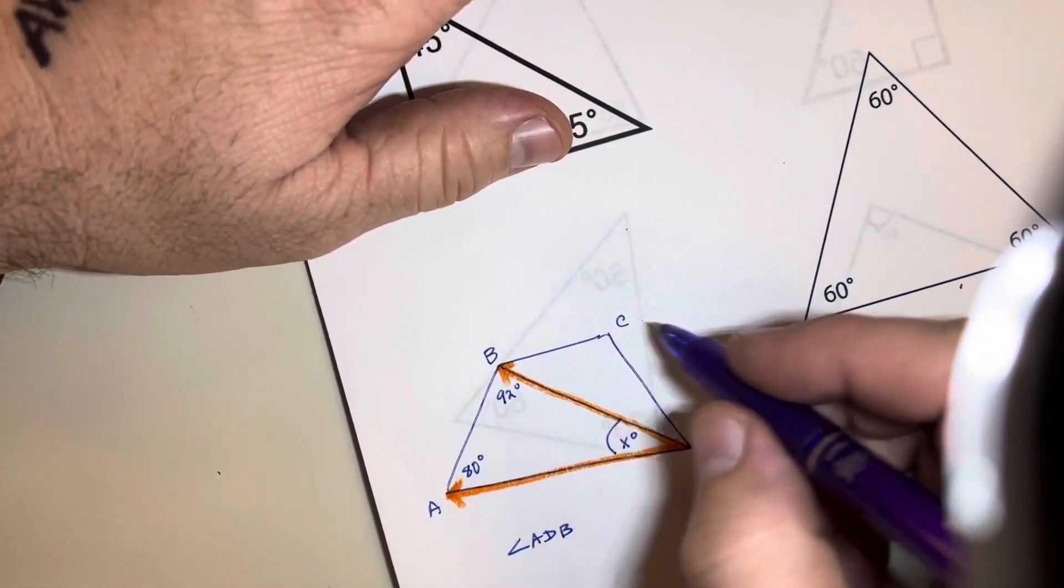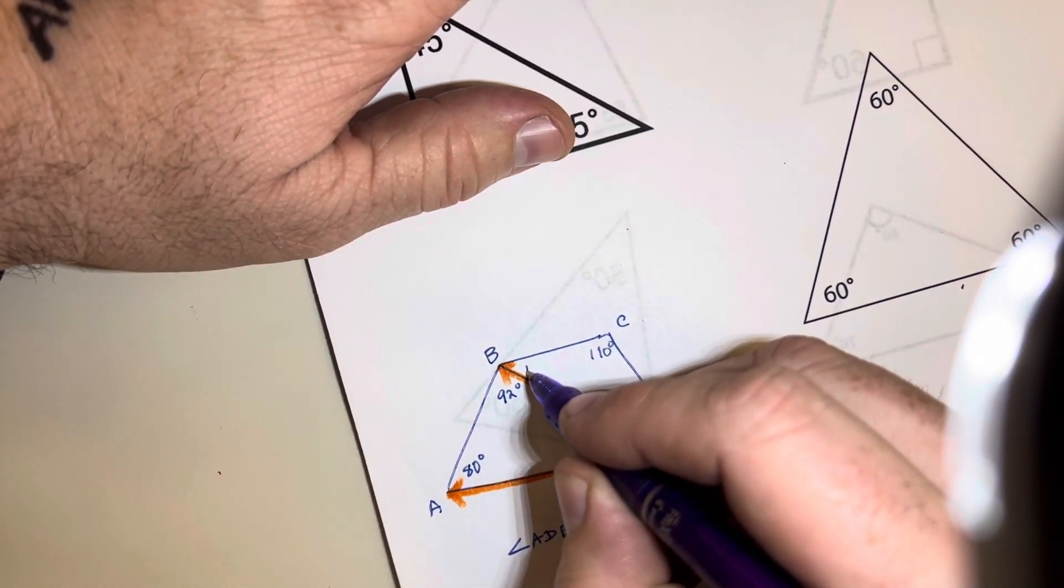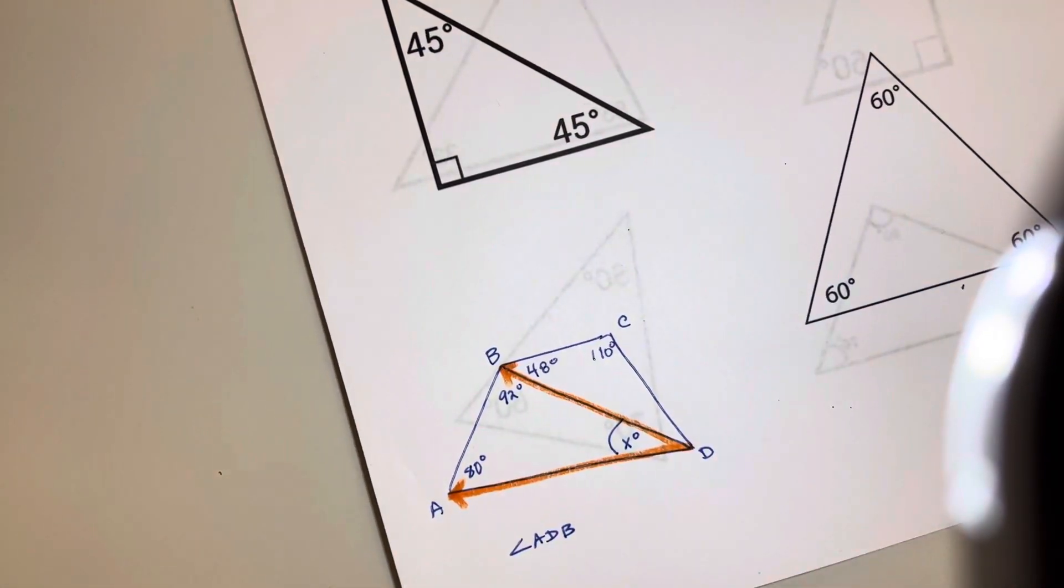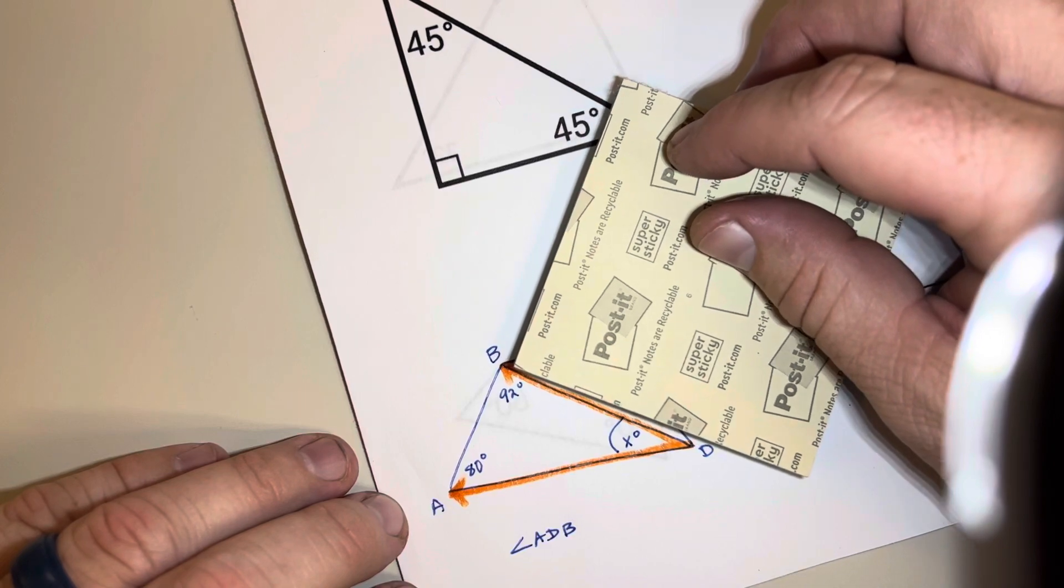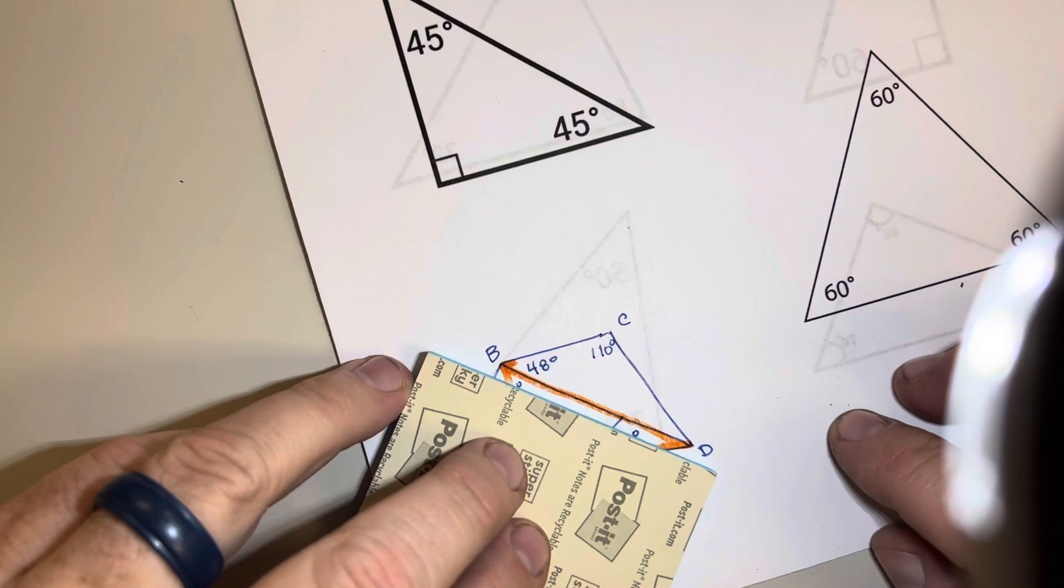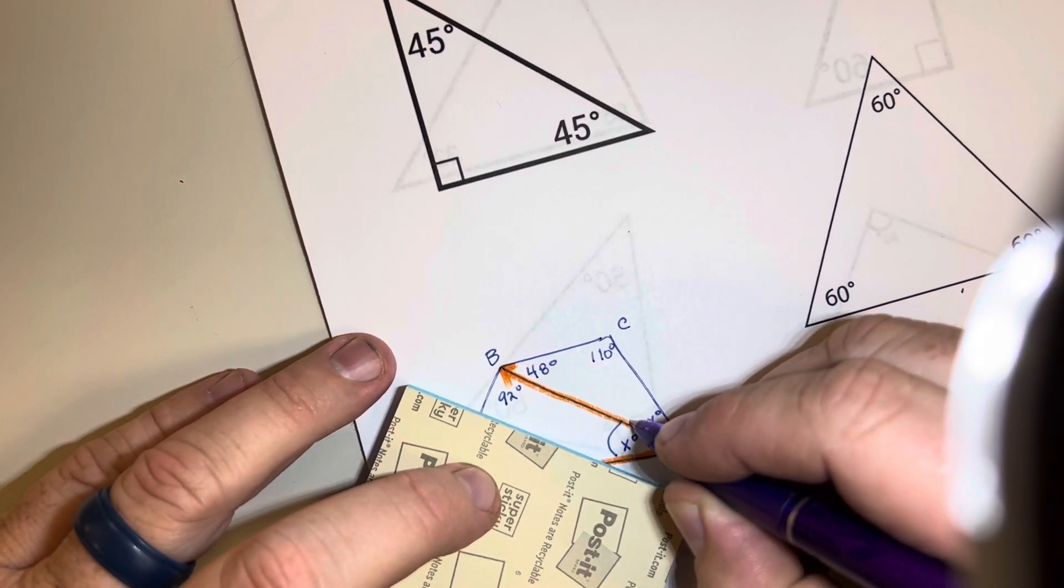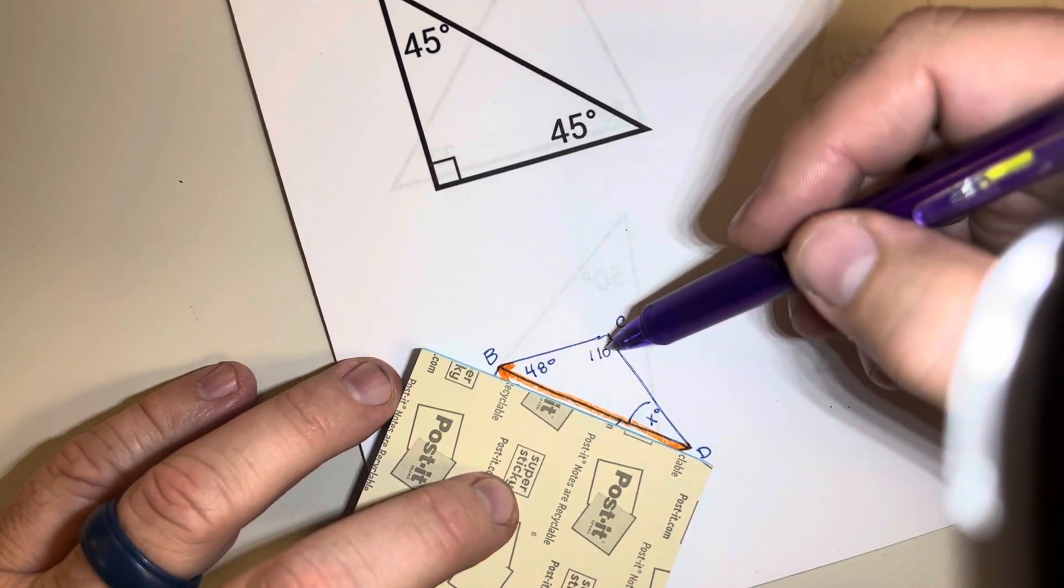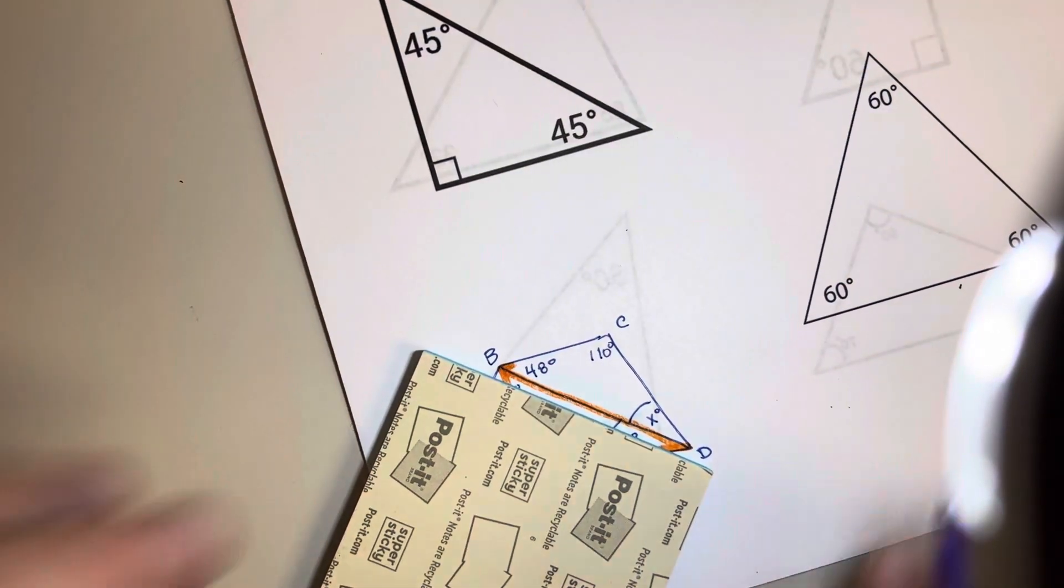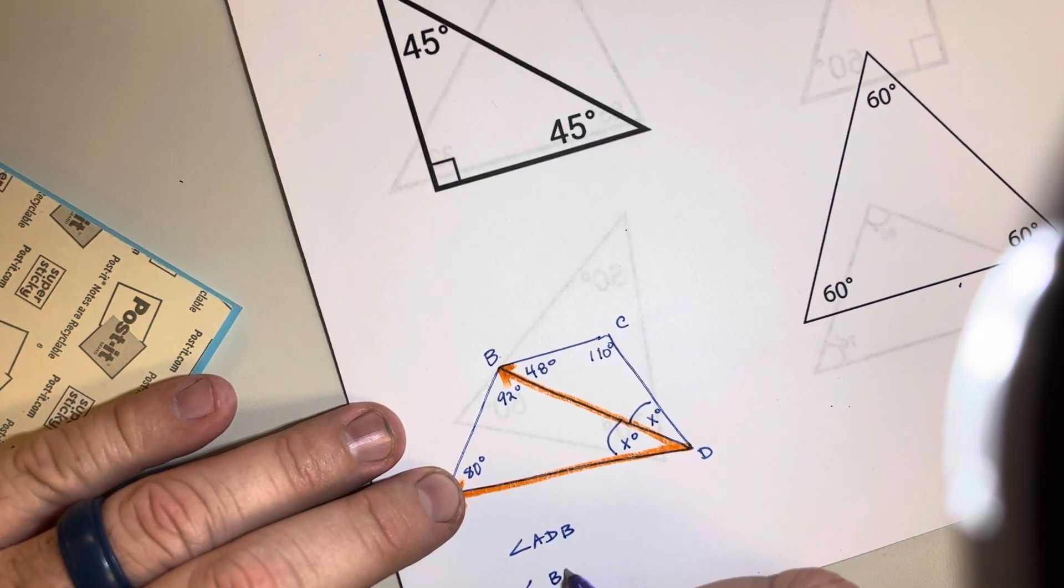Because we're just ignoring, no matter what it says over here, like for example, if this was 110 degrees, and this one over here was 48 degrees, we're just ignoring all of that. Like, I don't need that triangle over there to help me find this missing angle. And it's the same way here, I don't need this triangle over here to help me find this missing angle right there. I can ignore all of that, and I can just do 48 plus 110, subtract that from 180, and now I know how much this angle is.